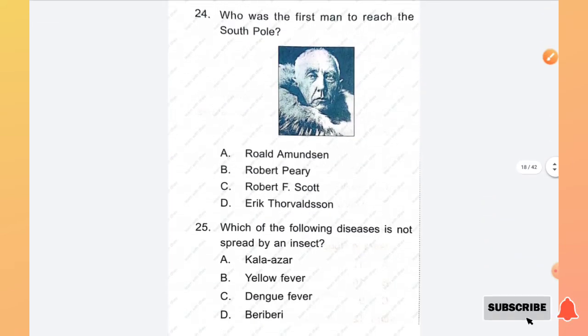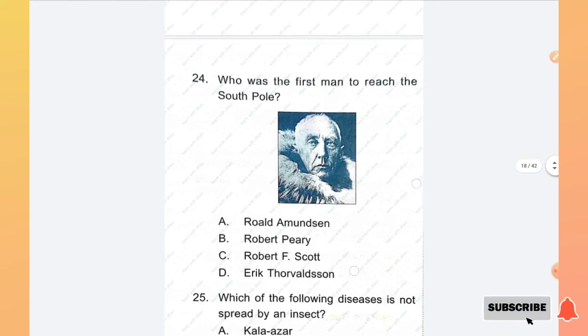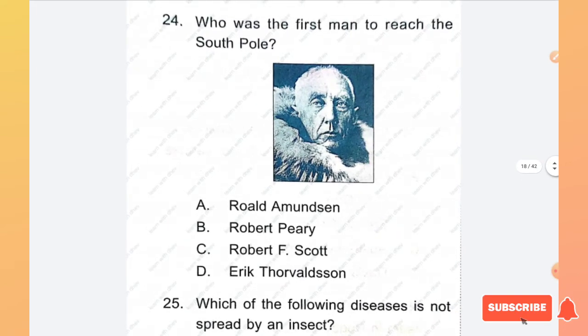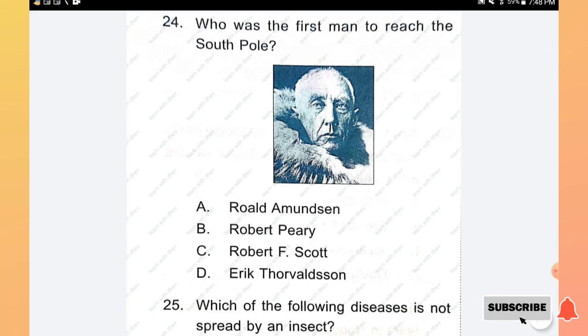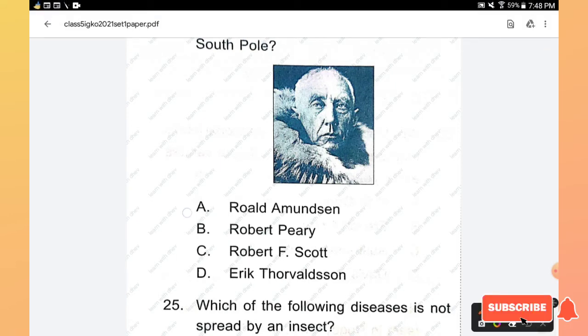Question number 24: Who was the first man to reach the South Pole? Options are Roald Amundsen, Robert Peary, Robert F. Scott, and Erik Thorvaldson. The right answer is option A, Roald Amundsen.